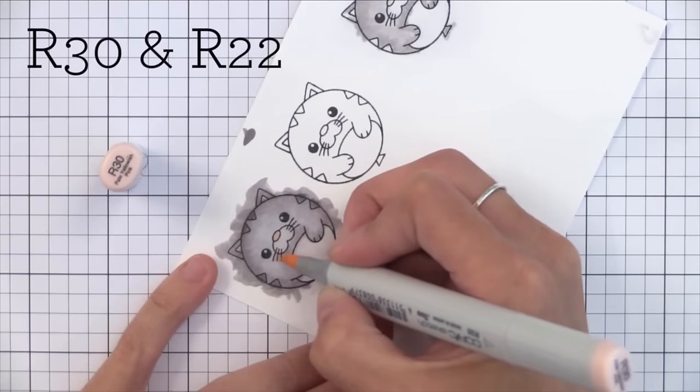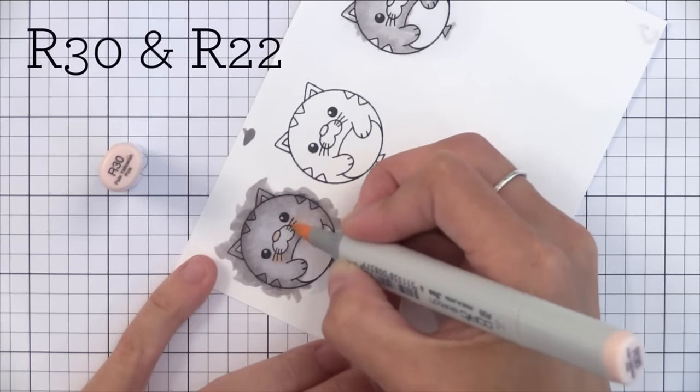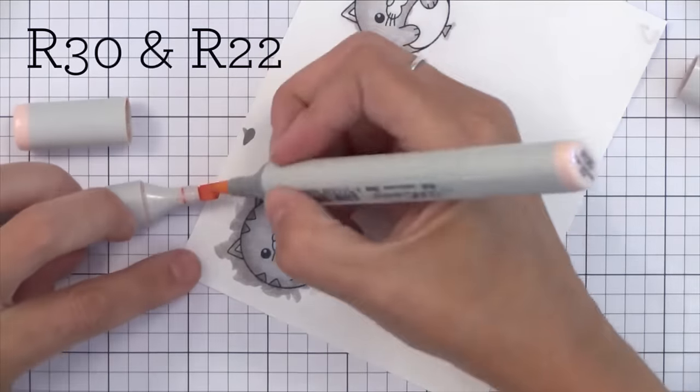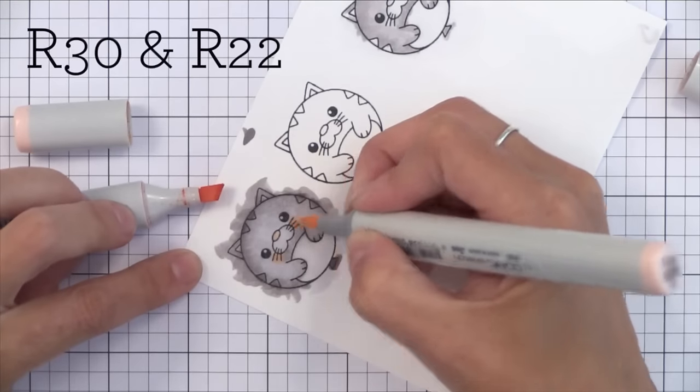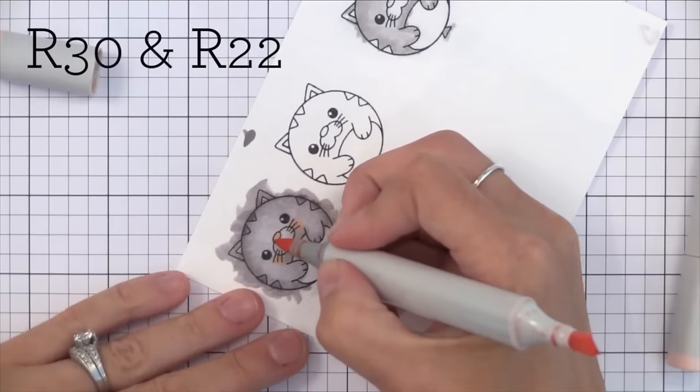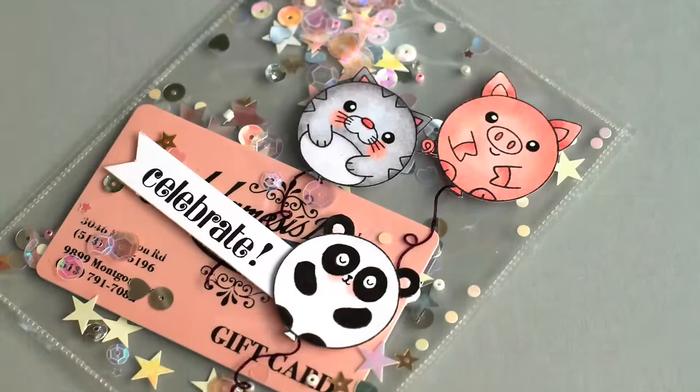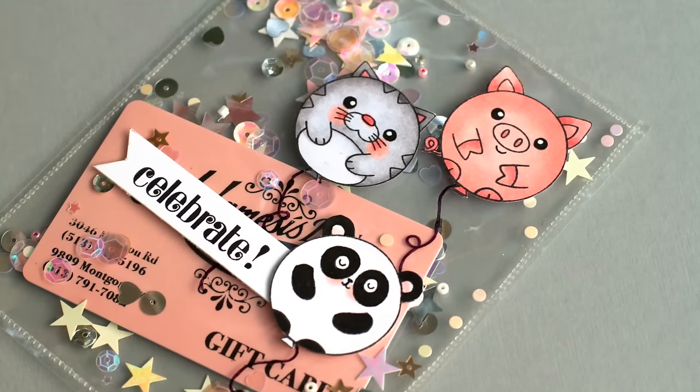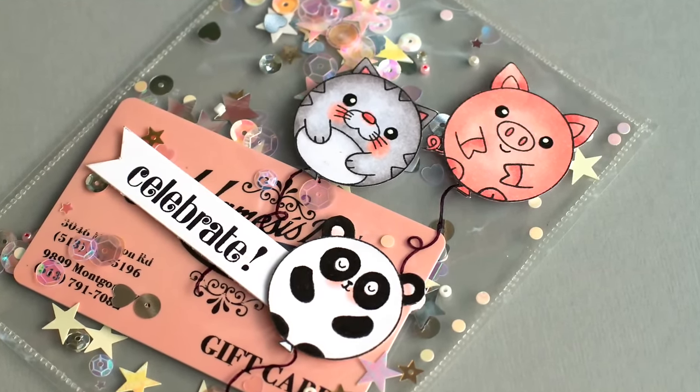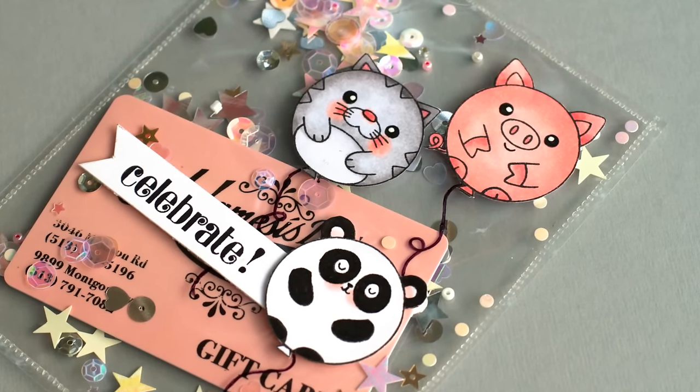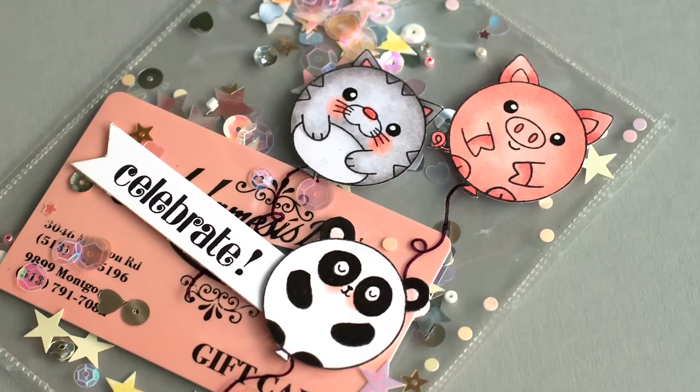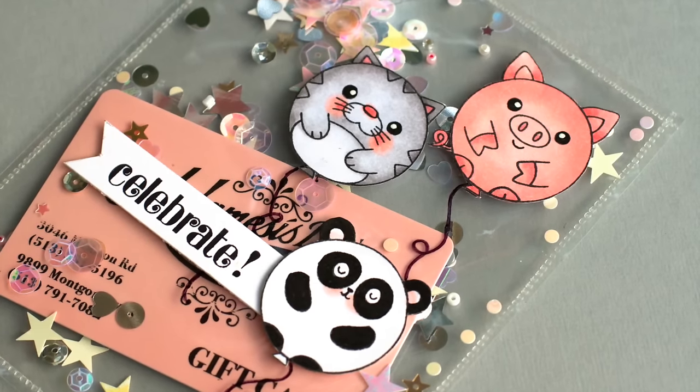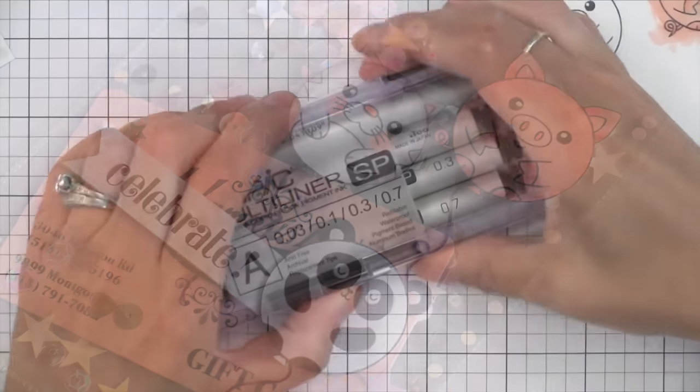Here's my trick for coloring cheeks. I just go right over whatever color I've already done with R30 and it kind of moves that gray aside. Then I add a little bit of R22 to it to give it a little more depth. That's a great way to get soft rosy cheeks that blend with the background color is just to go right over the color. Copics move each other so you can do that. Now for the panda I just left him white and add a little bit of that rosy color for the cheeks and that was a very quick one to color.